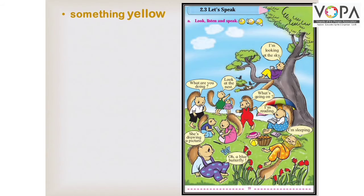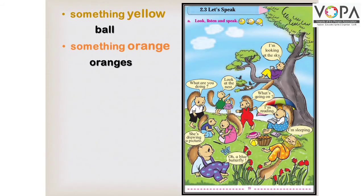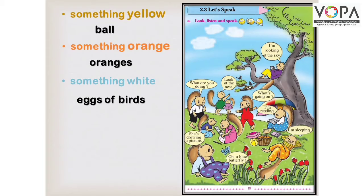Something yellow — देखो बच्चों पीले रंग का यहाँ हमको क्या नज़र आ रहा है, देखो यहाँ पर ball है, तो ball। Something orange — Oranges, यहाँ जो संतरे रखे हैं वो सब orange रंग के हैं। Something white — Eggs of the birds, देखो यह birds के जो अंडे हैं वो हमें white रंग के नज़र आ रहे हैं। Something black — और काले रंग का क्या नज़र आ रहा है? Birds — यह जो birds हैं वो काले रंग के हैं।